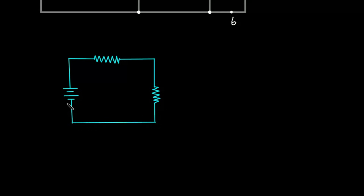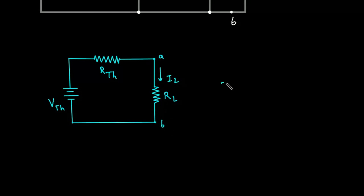This will be our VTH, that is Thevenin's voltage. This will be Thevenin's resistor, that is RTH. And this will be load resistor RL, with terminal A and terminal B. The formula for IL is: IL is equal to VTH divided by RTH plus RL.